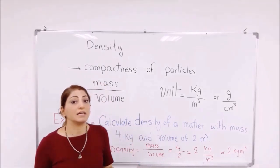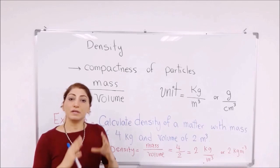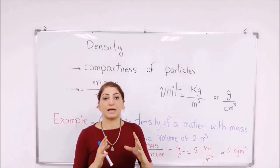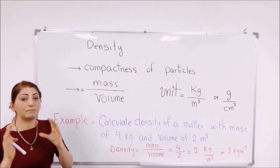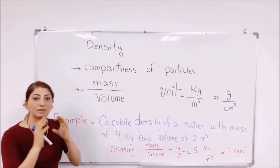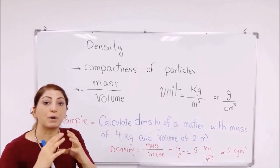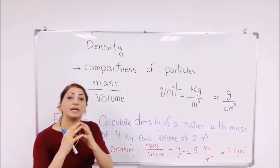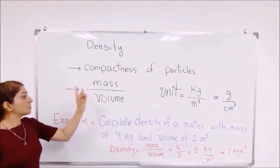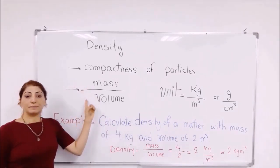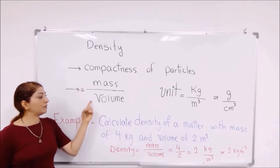Whether the solid is regular shape or irregular, we know how to measure them. Now we need to measure each of these quantities separately using those proper instruments. Then substitute in the formula: mass of the object over volume.